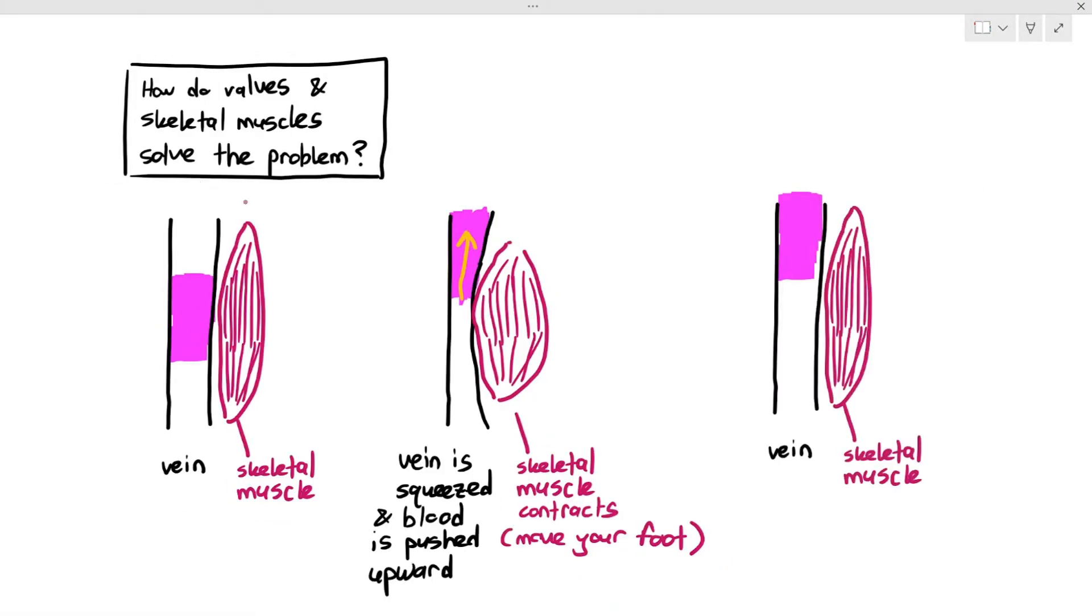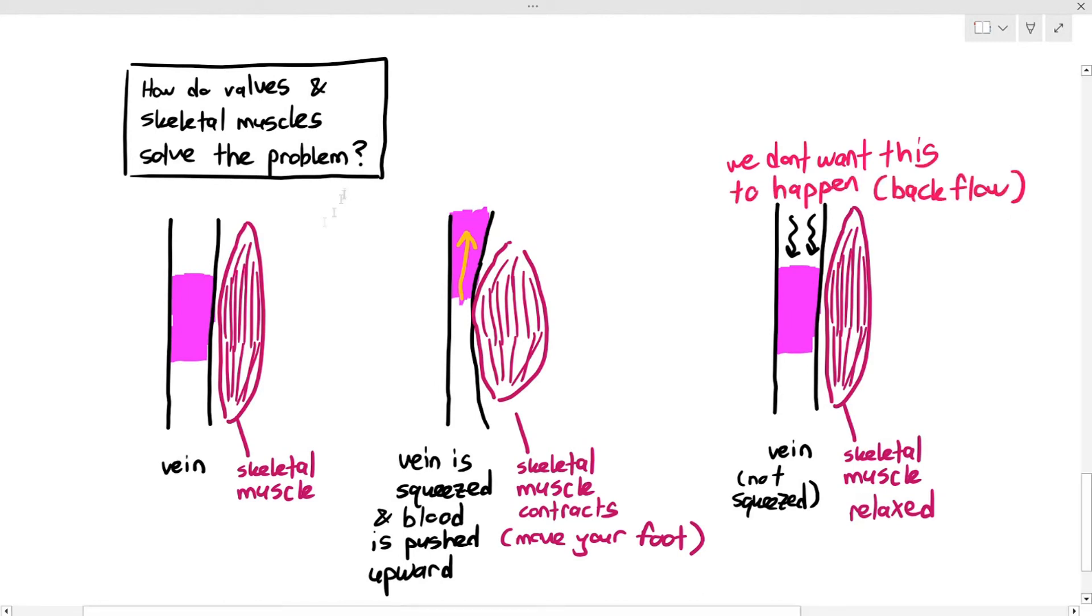Now, the skeletal muscle will then relax, but when the skeletal muscle relaxes, the vein is no longer squeezed, and the blood may move downwards. Now, do we want that to happen? We don't want that to happen, do we? Okay? Because that's not a good thing. Okay? Right? So, what's the solution to prevent the backflow?